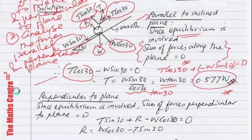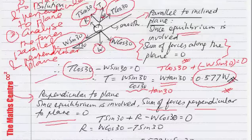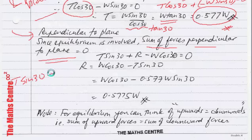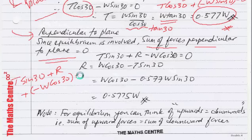Now we have to look at the forces perpendicular to the plane. Again, the sum of forces perpendicular to the plane must be 0 because of equilibrium. Assuming upwards as positive: T sin 30 is going up, R is also going up, and W cos 30 is going down. So we write T sin 30 plus R minus W cos 30 equals 0.